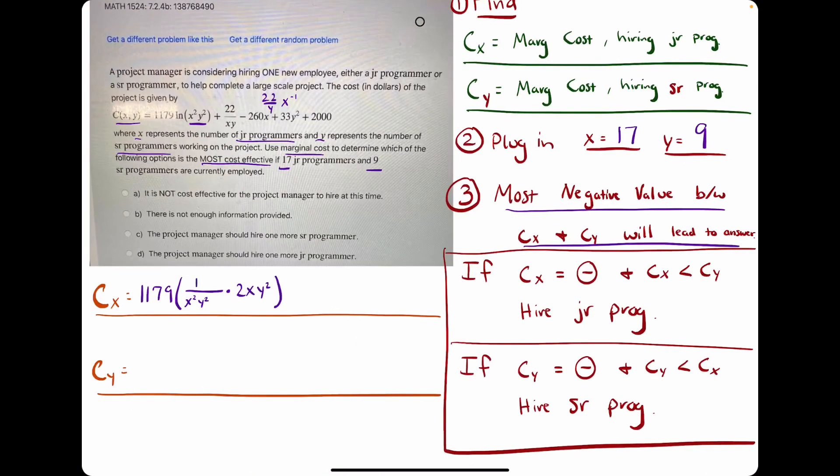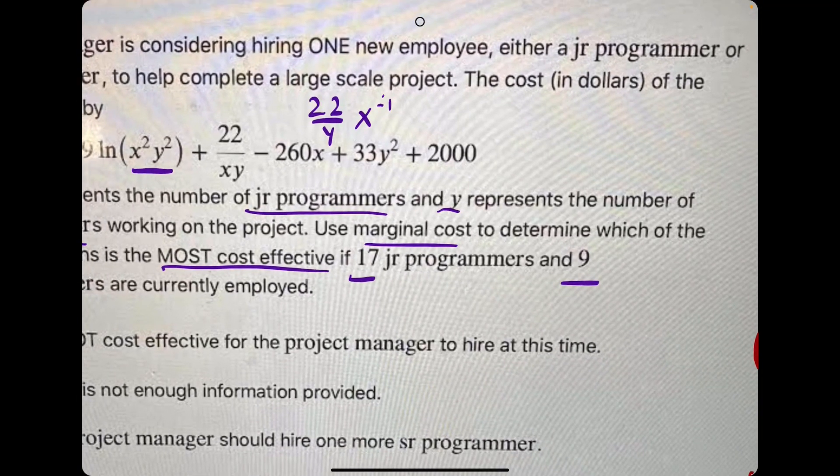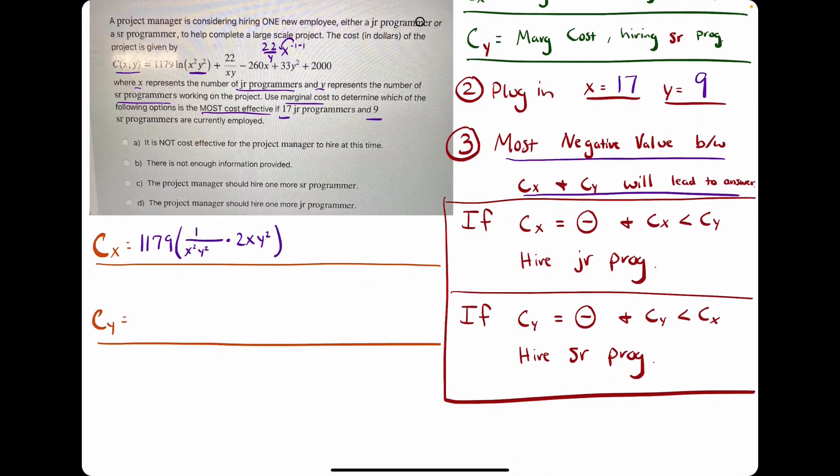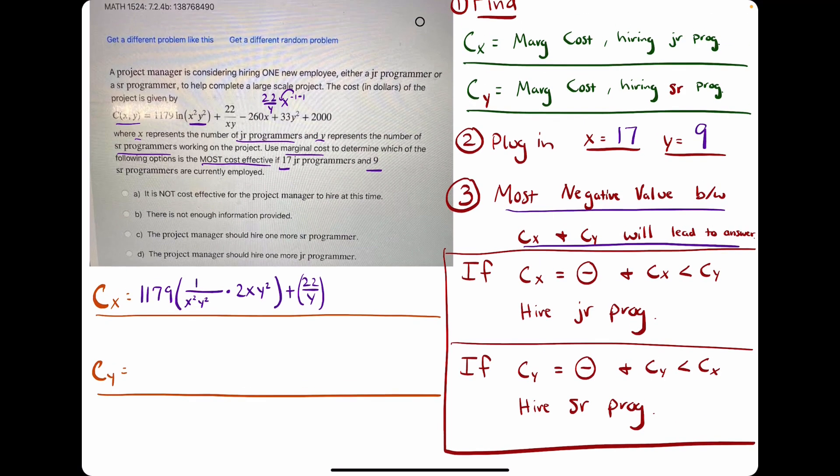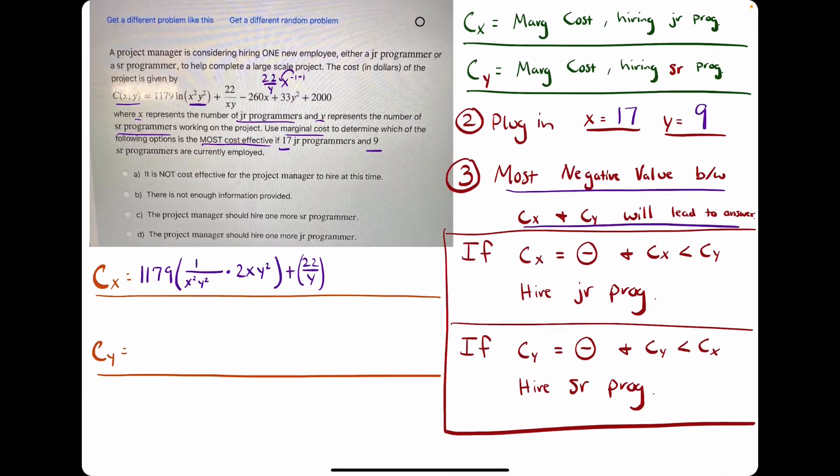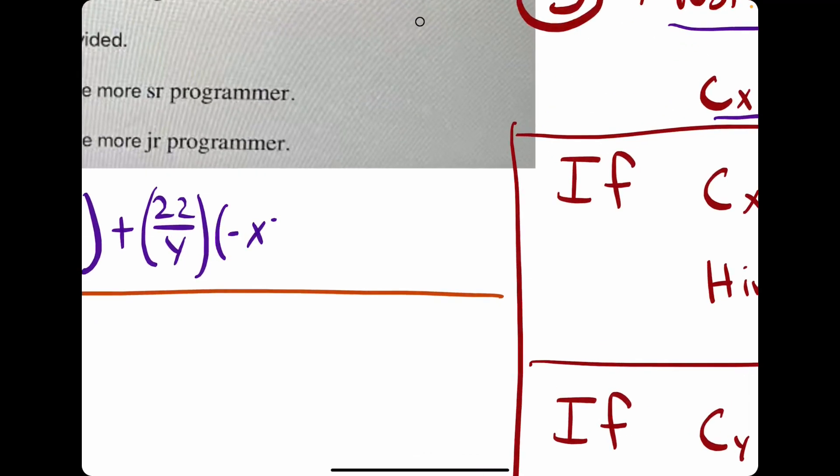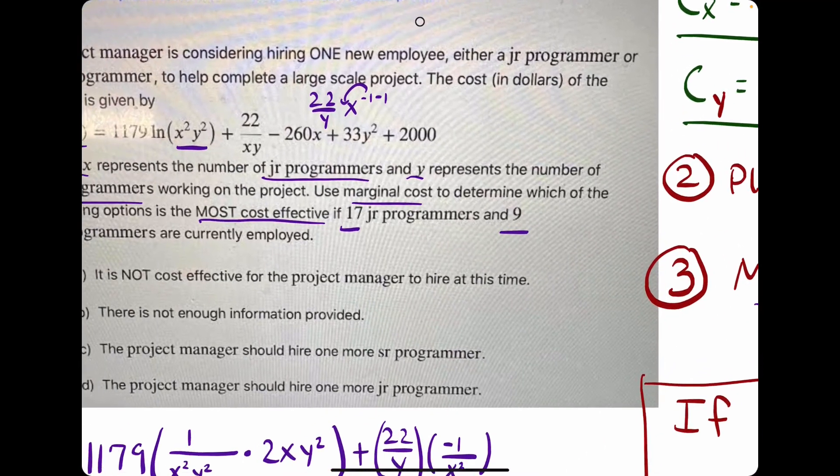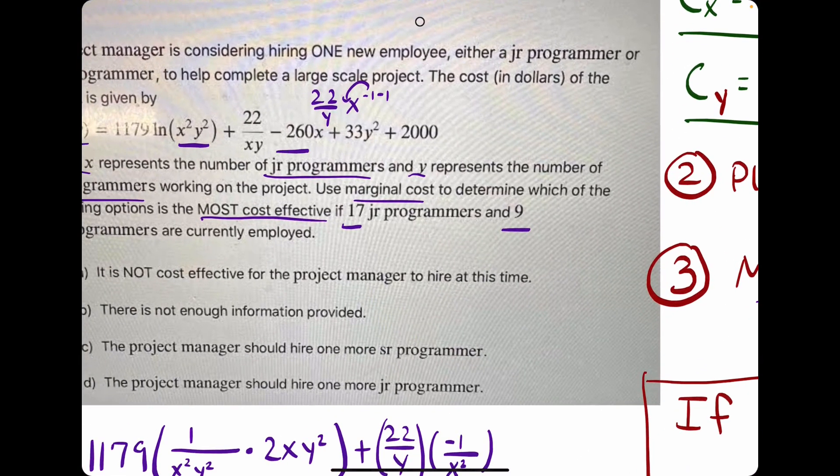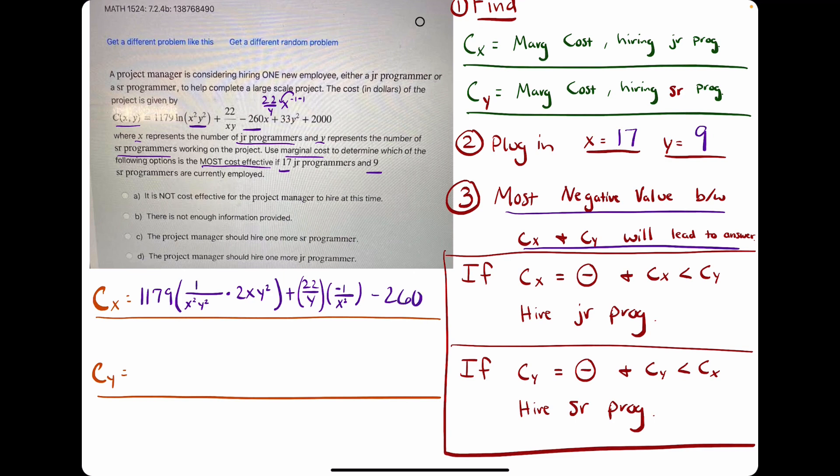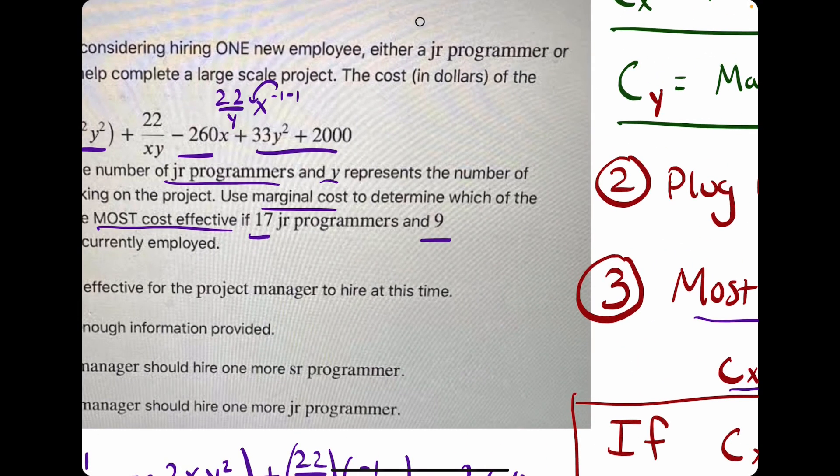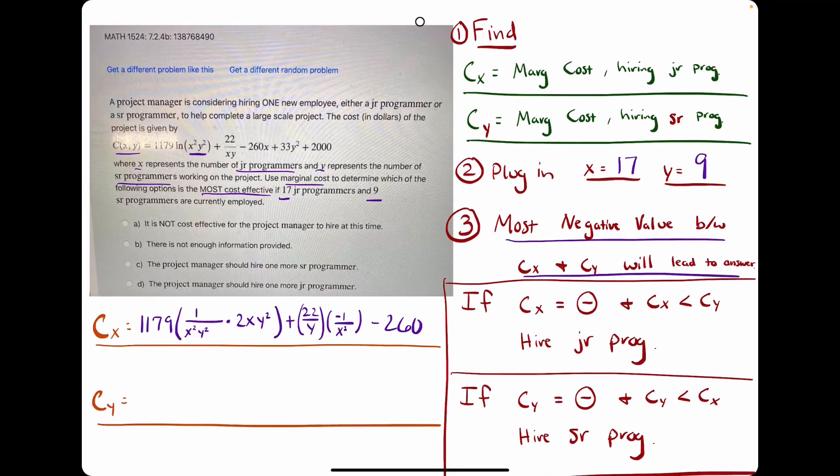22 over xy is equivalent to 22 over y times x to the negative 1. So we take the derivative of the x term by bringing out the negative 1 and subtracting the exponent by 1. So basically we have plus, we can leave the 22 over y as it is, but then we take the derivative of the x to the negative 1. So we get negative x to the negative 2. I'll go ahead and rewrite this as negative 1 over x squared. And then minus 260x goes to minus 260, and then the other terms don't have x in them, so the derivatives of those with respect to x go to 0. So we are done for Cx.